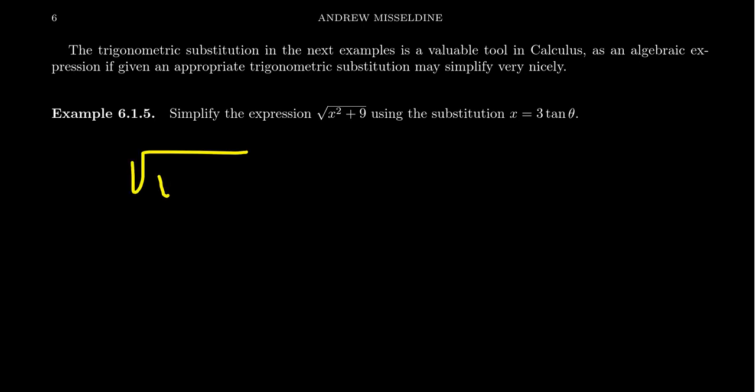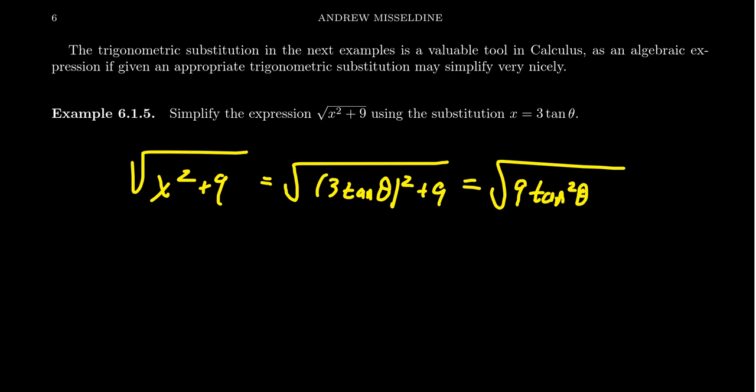If you take the square root of x squared plus 9, we're going to make the substitution. We're going to replace the x with 3 tangent theta, because that's what we were told. Don't worry about why that's the substitution. That'll come much, much later. Right now, we just want to simplify the expression. Now, if you have a 3 tangent theta squared, this is the same thing as 9 tangent squared theta plus 9. You'll notice that both terms are divisible by 9. I'm going to factor out the 9. So we get 9 times the tangent squared theta plus 1.